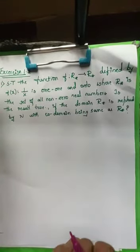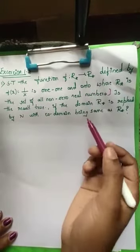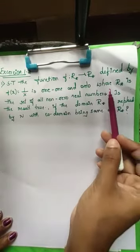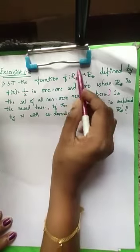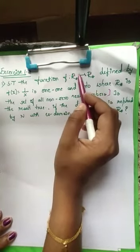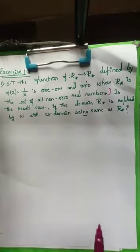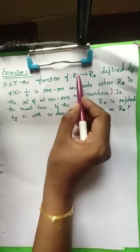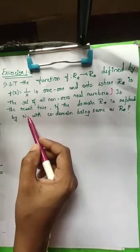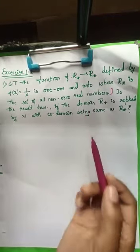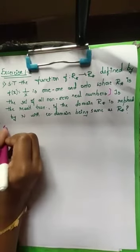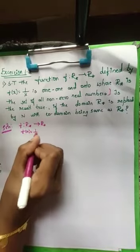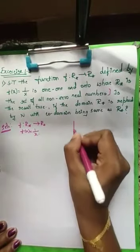The first question is to prove f is one-one and onto on R*. There is also a second part: is the result true if the domain R* is replaced by N? So you have to check another function — f(x) = 1/x — but now the domain is N, the natural numbers, and the co-domain is still R*. First we will prove f from R* to R* is one-one and onto.